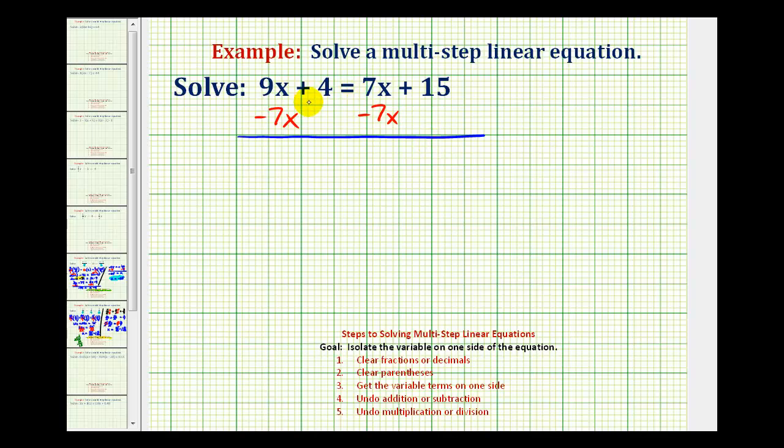The reason we're doing this is, looking at the right side, 7x minus 7x would be zero, so now there's no longer an x term on the right side. Going back to the left side, we have 9x minus 7x, that's 2x. We still have plus 4, bring down the equal sign, and here we have positive 15.